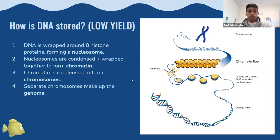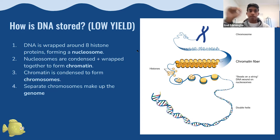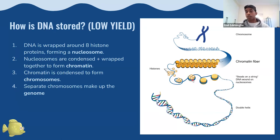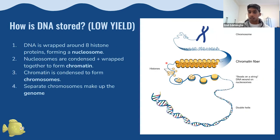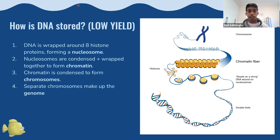DNA is stored within the cell in a hierarchy of increasing size. DNA is wrapped around histone proteins — eight histone proteins with DNA wrapped around them is called a nucleosome. Nucleosomes are condensed and wrapped together to form chromatin, and chromatin is further condensed to form the chromatid and chromosome. Several chromosomes produce the genome of the human body, which refers to all of the genetic information in a human body.